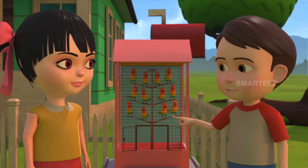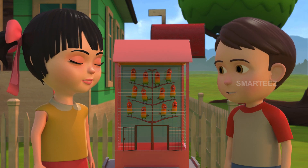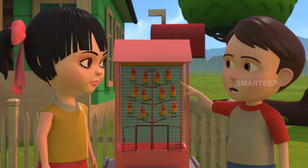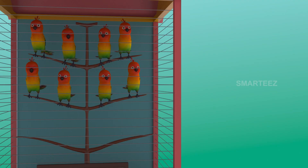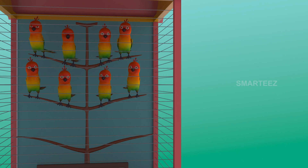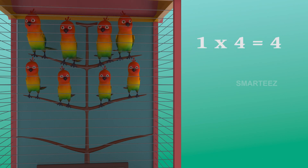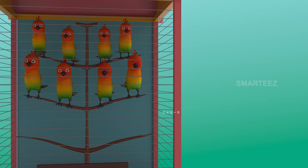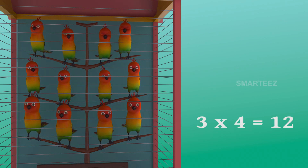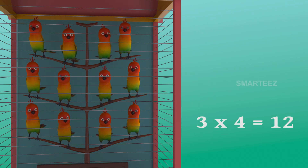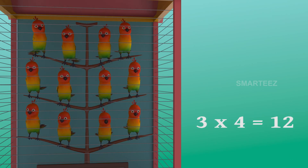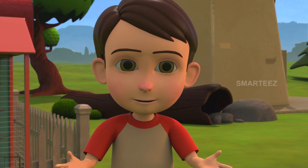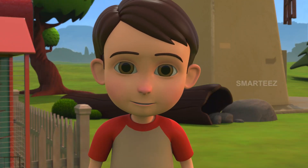Yes. So three fours make it twelve. Yes, that's true. One four is four, two fours are eight, and three fours are twelve. The parakeets are settling in the cage in sets of four. The first set had four parakeets, the second set of four made it eight, now the third set of four parakeets joined the eight parakeets to make it twelve. So three sets of four parakeets make it twelve parakeets.